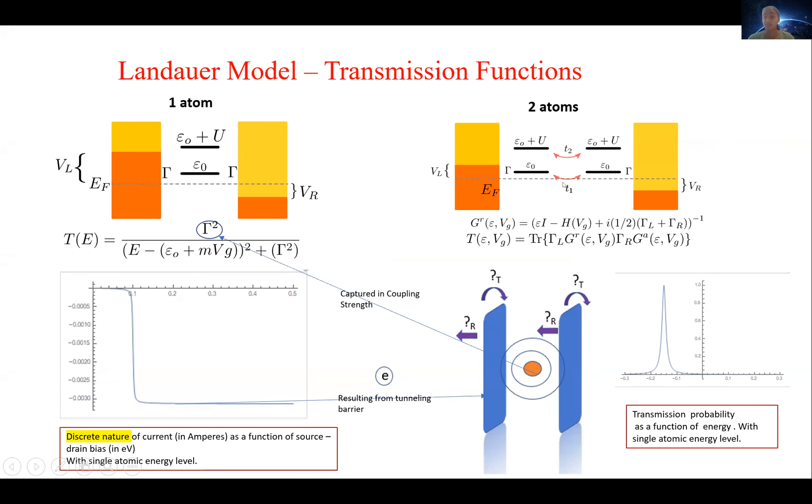And this potential barrier is what allows us to treat this atom as a box, in which electrons of only particular energies can exist. And we see this in the stepwise nature of the current.